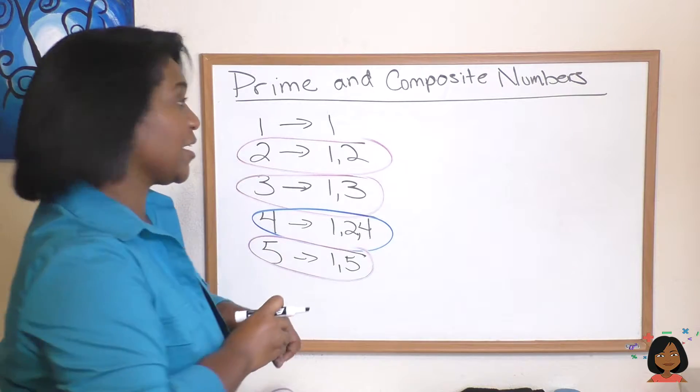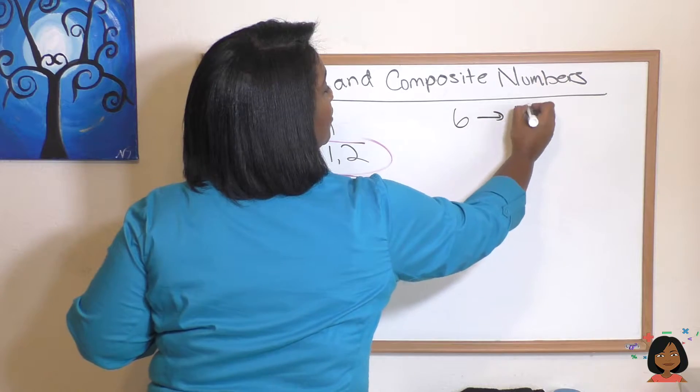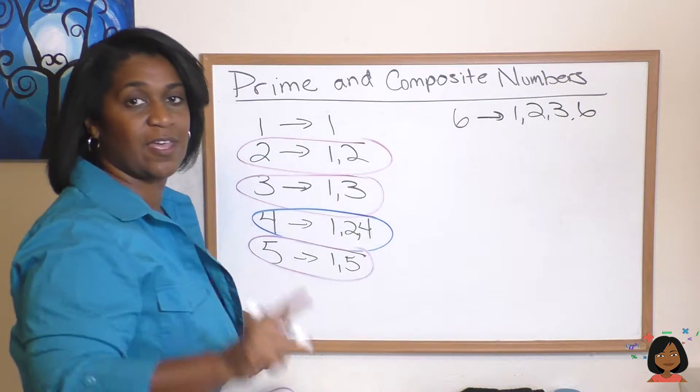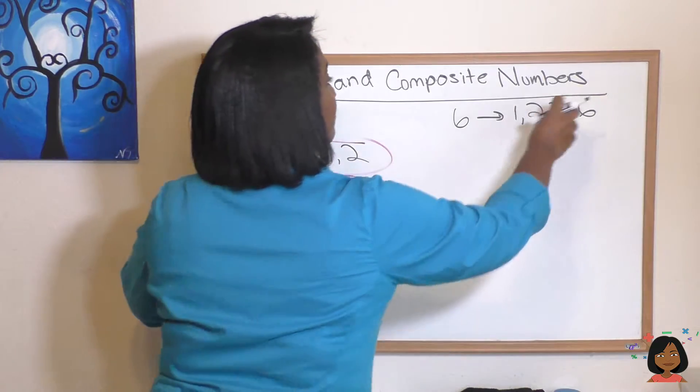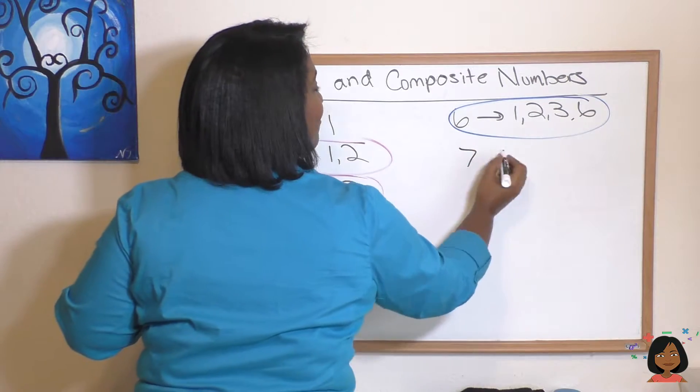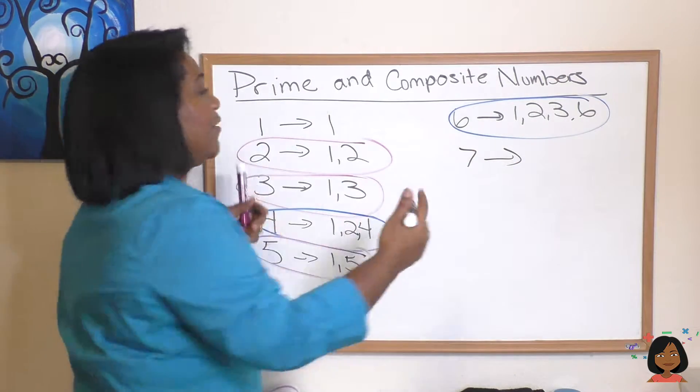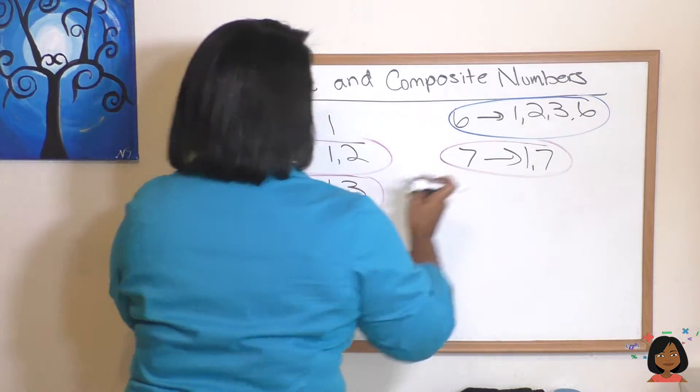Let's go to six up here. Six factors are one, two, three, and six, which makes it composite, composite, that's right, blue for that. And number seven, the factors are one and seven, which makes it prime.